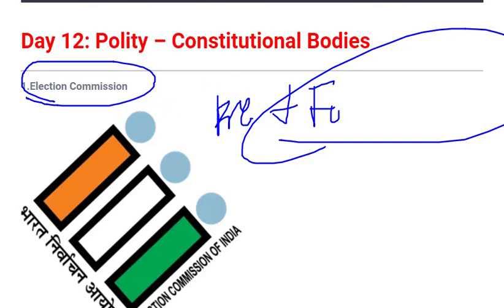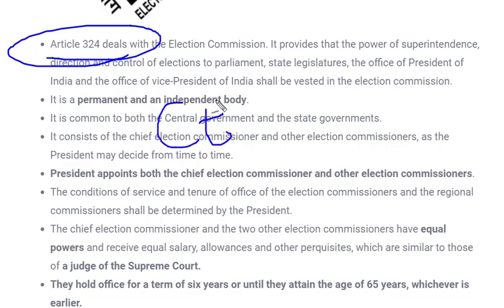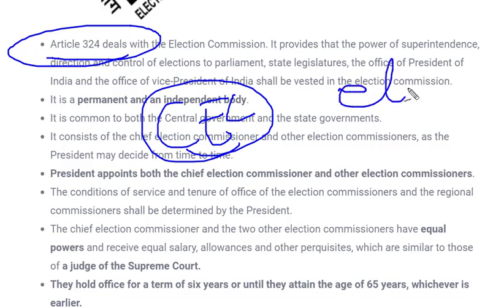The Election Commission is mentioned in Article 324, which deals with its composition, how it functions, and everything. Regarding composition, there is a Chief Election Commissioner — the chairperson — and there are other Election Commissioners whose number is not fixed in the Constitution. That number is decided by the President, who determines how many Election Commissioners are required as per the requirement.